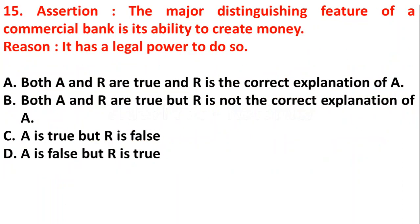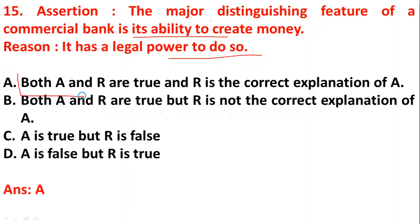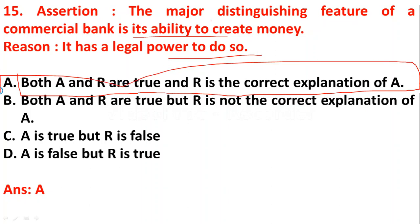Question 15 — Assertion and Reason. Assertion: the major distinguishing feature of a commercial bank is its ability to create money. Reason: it has a legal power to do so. Option A: both assertion and reason are true, and reason is the correct explanation of assertion. Option B: both true, but reason is not the correct explanation. Option C: assertion is true but reason is false. Option D: assertion is false but reason is true. The right answer is option A — both assertion and reason are true, and reason is the correct explanation of assertion.